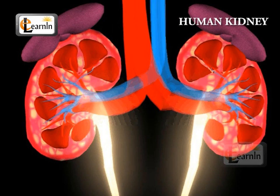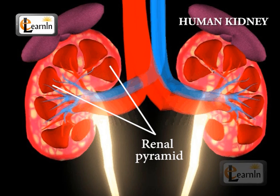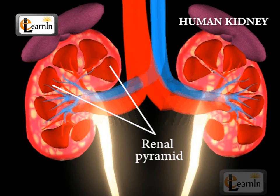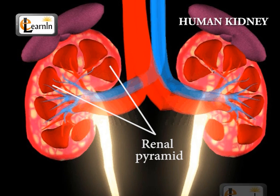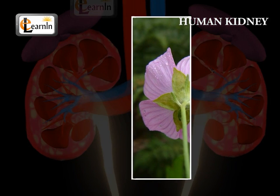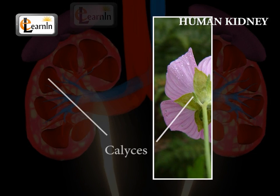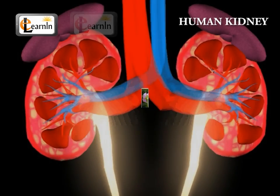In the medulla, there are 9 to 12 inverted pyramid-like structures with a broad base towards the cortex and a narrow end towards the pelvis. These extend into the pelvis. The broad end of each pyramid is branched and resembles the sepals of a flower. Hence, these are called calyces.